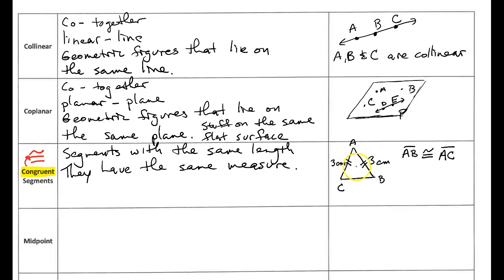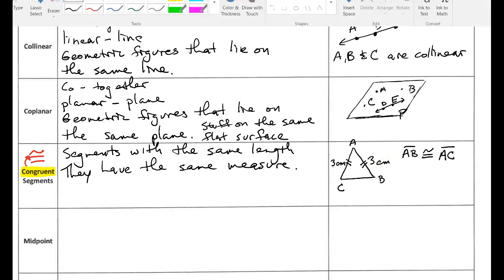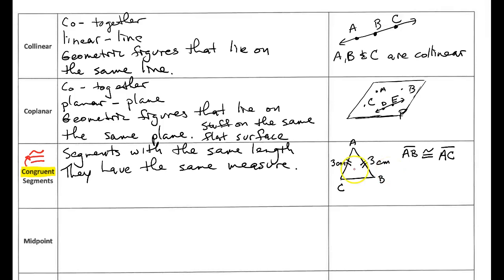So if I put the same mark on each segment. Okay you can put one little line or two little lines. I just put two little lines here. These are called tick marks and they're used to show congruency.